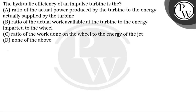The question given here is: the hydraulic efficiency of an impulse turbine is — with the following options: (A) ratio of the actual power produced by the turbine to the energy actually supplied to the turbine, (B) ratio of the actual work available at the turbine to the energy imported to the wheel, (C) ratio of the work done on the wheel to the energy of the jet, or (D) none of the above.